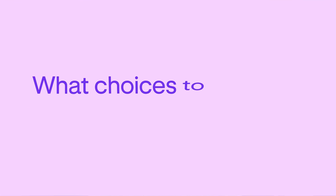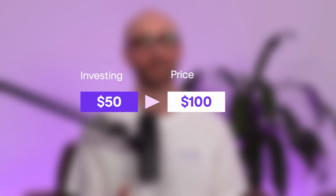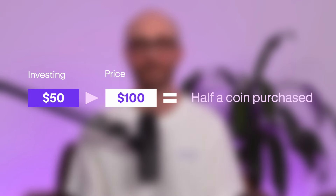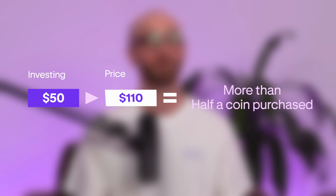Dollar cost averaging allows investors to buy more of an asset when its prices are lower and less of an asset when its prices are higher. For example, let's say an investor is looking to purchase $50 worth of a coin that has a market price of $100. That means they'd be able to purchase half a coin each week if its price stayed at exactly $100. But if the price of the coin went below $100, their $50 would go further, and they'd be able to purchase more of that coin with that same $50 investment. However, the opposite is also true — if the price of the coin rose above $100, their $50 wouldn't go quite as far, and they wouldn't be able to purchase the same amount of that coin with those same $50.